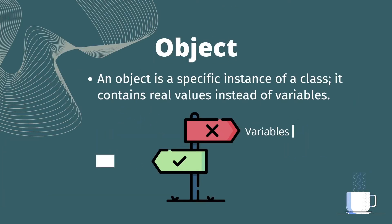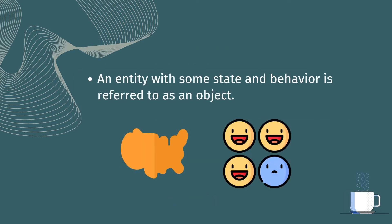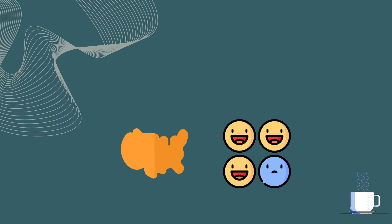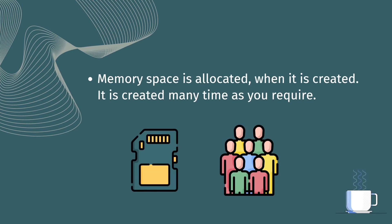First, let's see what is an object. An object is a specific instance of a class. It contains real values instead of variables, meaning that an object represents real values, not just variables. Any entity with some state and behavior is referred to as an object. Memory space is allocated when it is created, and it can be created as many times as required.